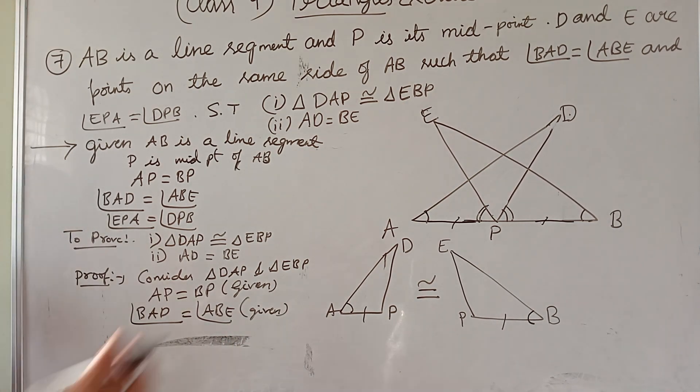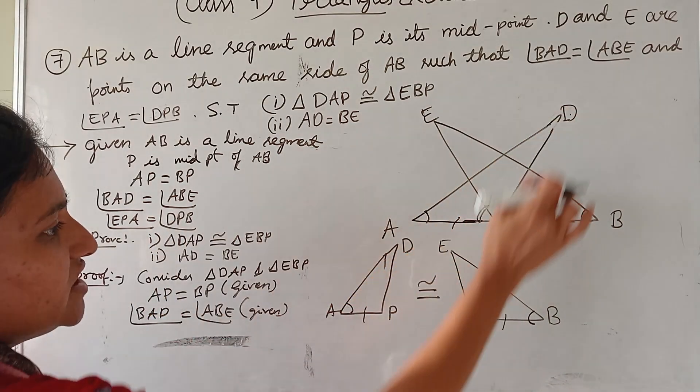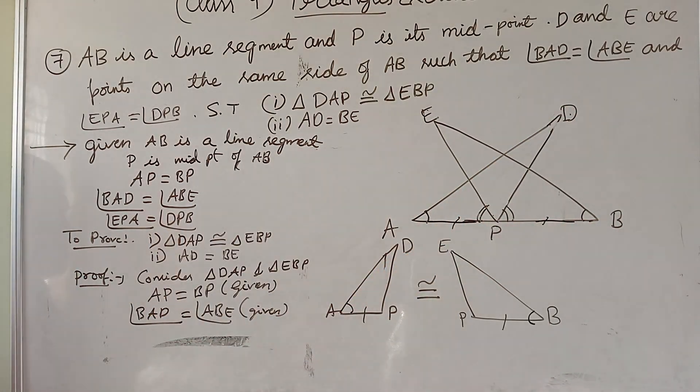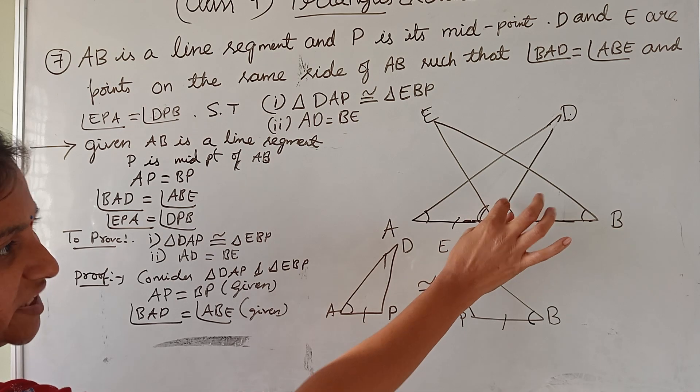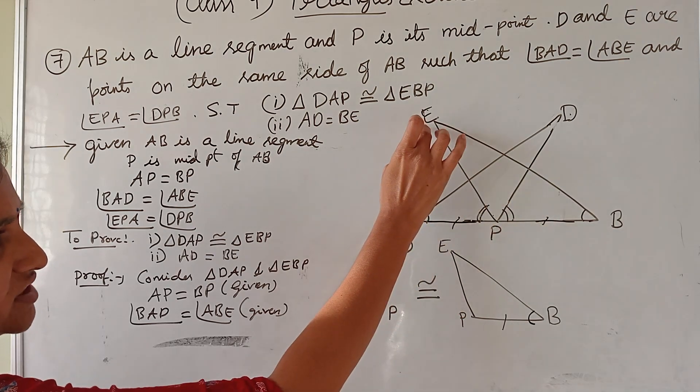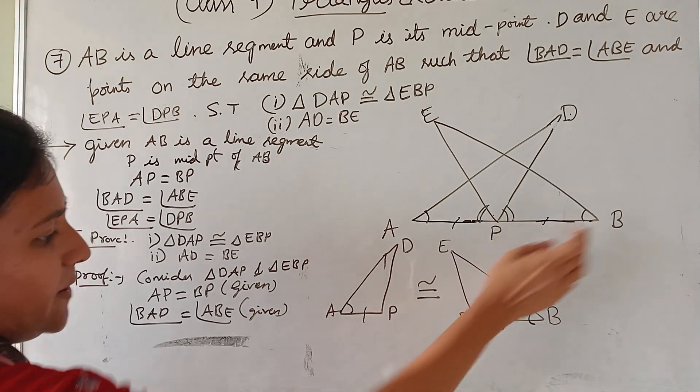Next angle EPA equal to DPB. This one I can't take for consideration because here only half portion they are telling equal, not the full P. They are telling the half portion, that is EPA equal to DPB.